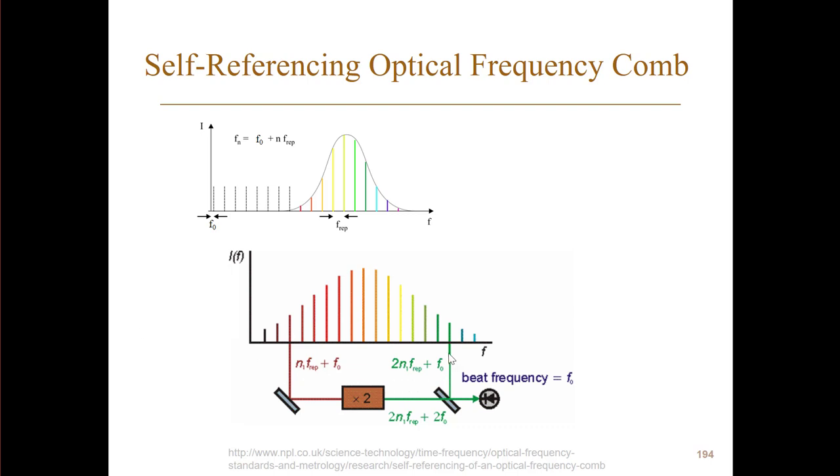And if we now take this one down here minus this one up here, you see in both of them we have two n1 f-rep, but here we have two f-zero and here we have f-zero. So if we take and look at the difference frequency between these two, which is exactly what we get on this detector, that's f-zero.